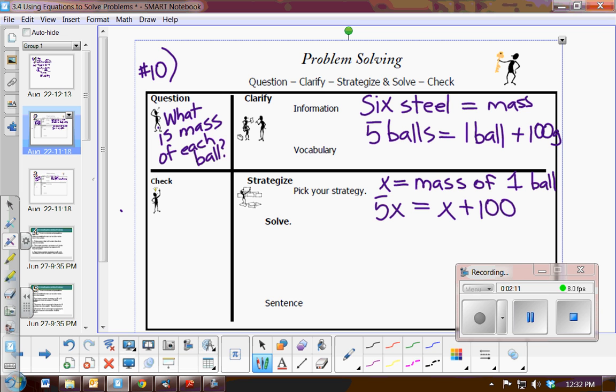Now I'm going to solve for the mass of one ball. I'm going to subtract x from both sides using the subtraction property of equality, and I have 4x equals 100. When I divide both sides using the division property of equality, I find that the mass of one ball is 25.